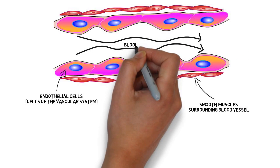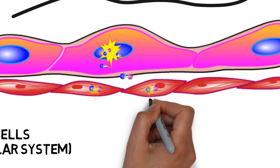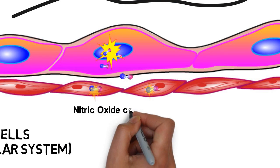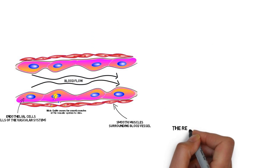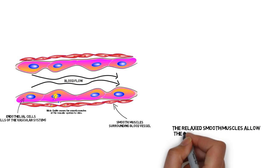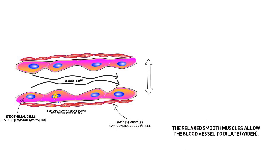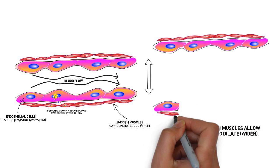Here's how. Nitric oxide is a gas that, when produced, causes the smooth muscles of the vascular system to relax. The relaxation of the smooth muscles enables the blood vessels to dilate, or widen in diameter, an effect known as vasodilation.